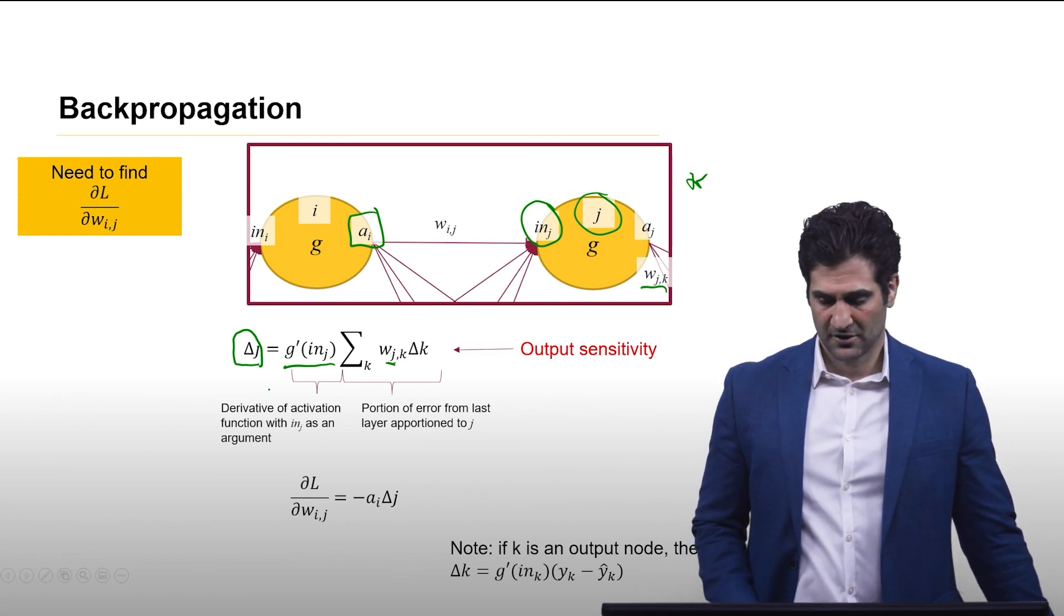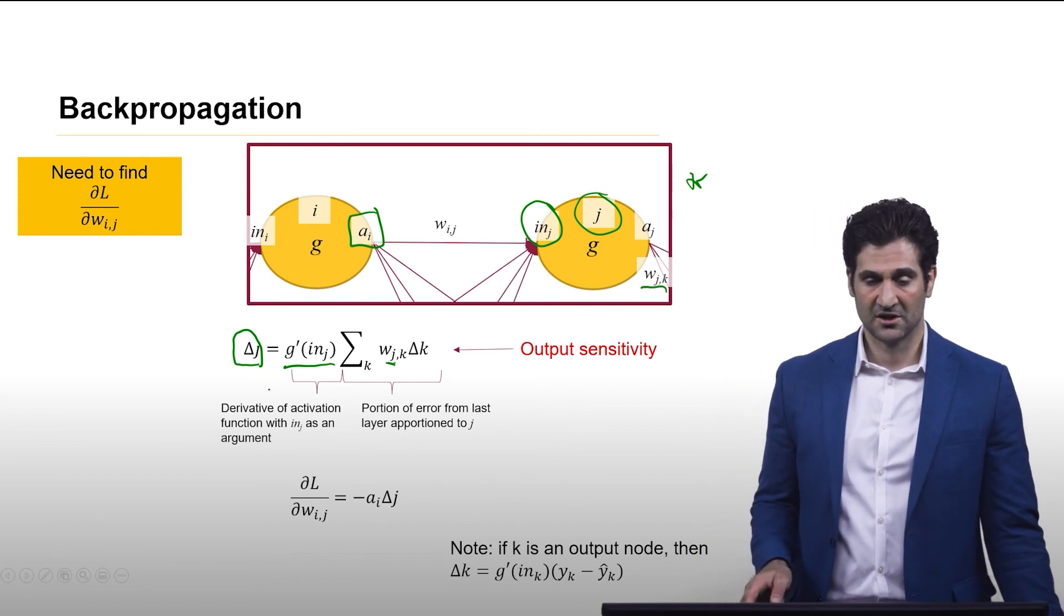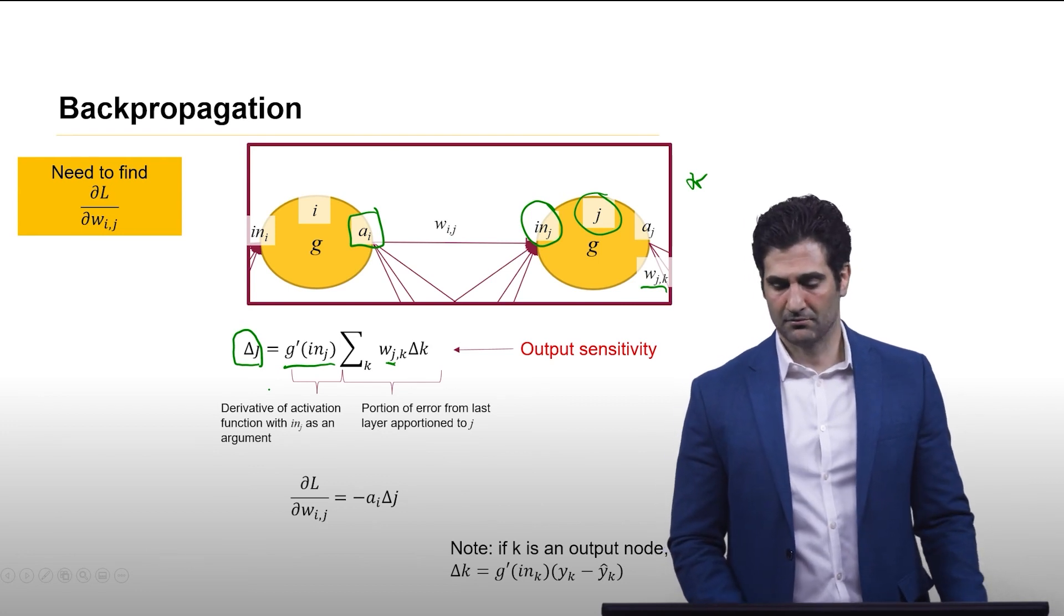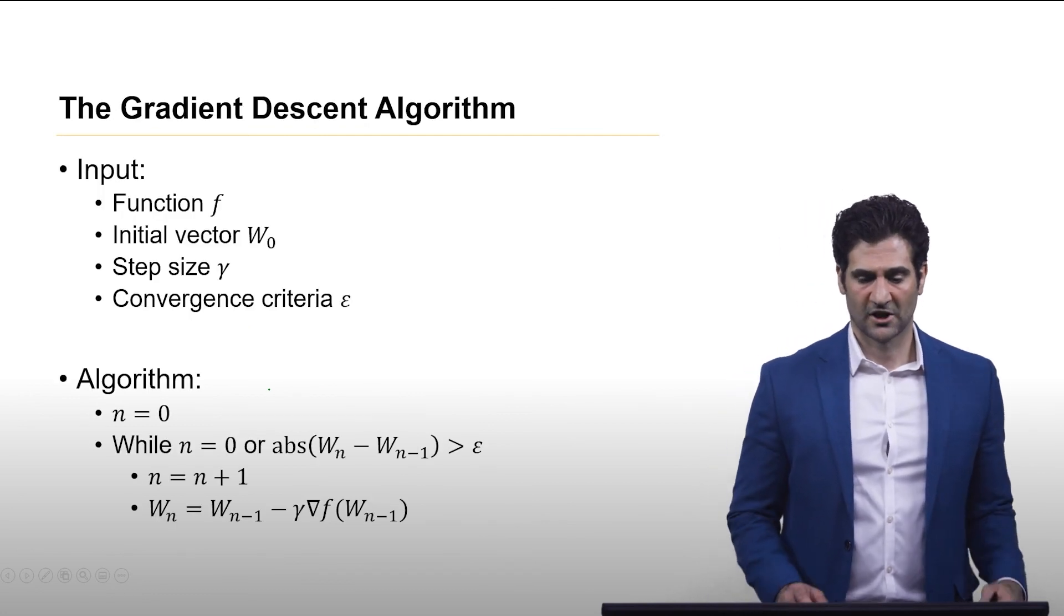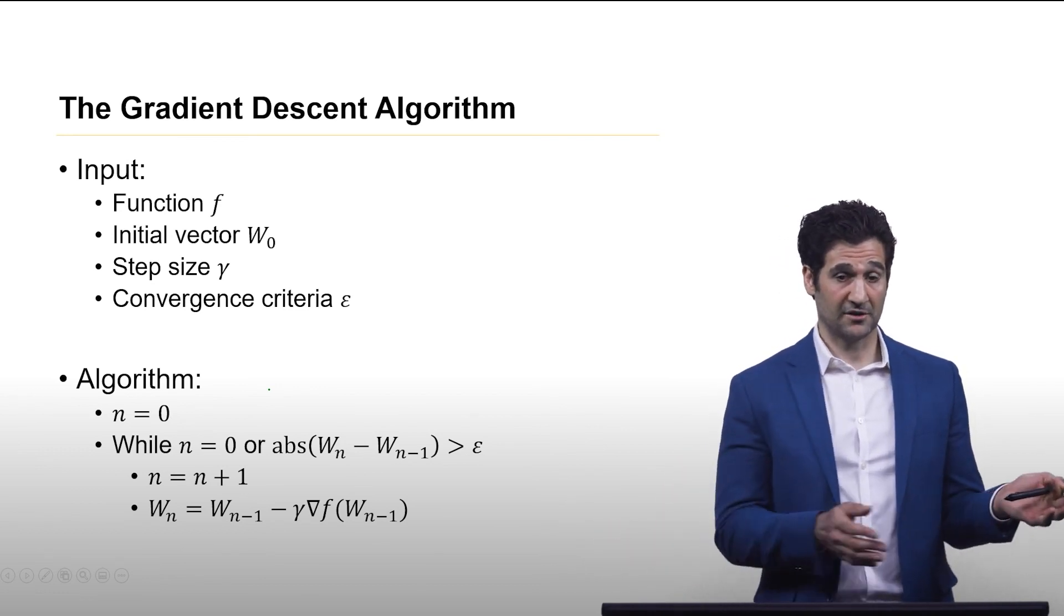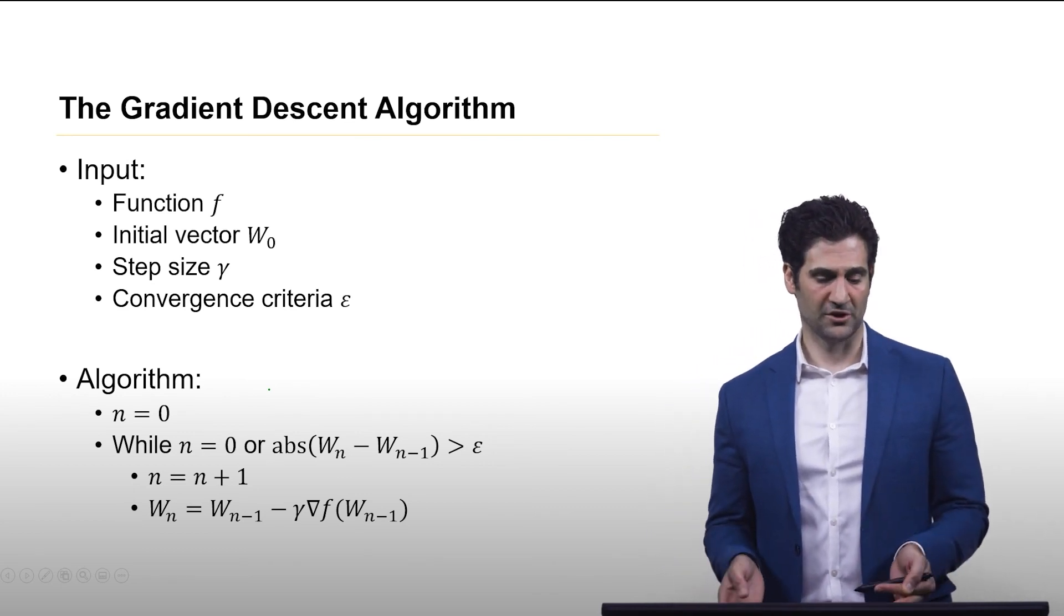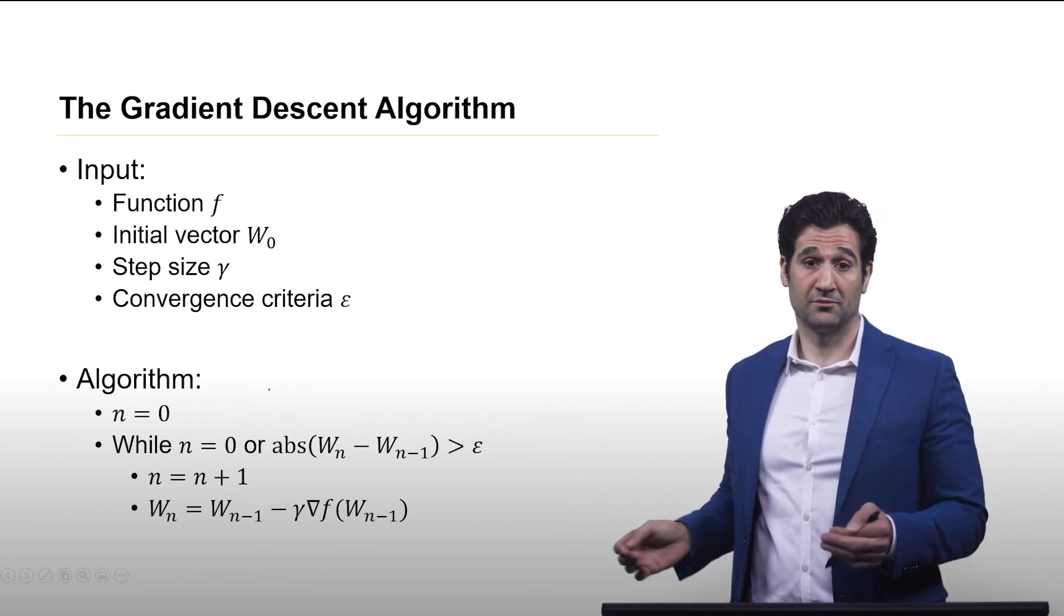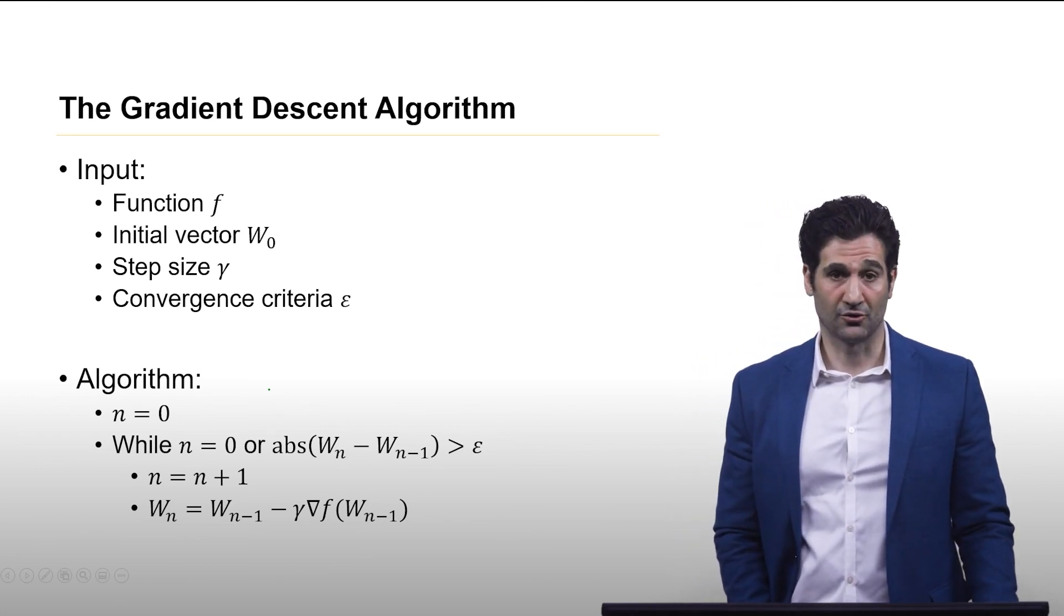One quick note, if k is an output node, the output sensitivity is computed based directly on the loss. Just a technical note, because it's the last layer. Well, now that we have this algorithm, backpropagation, which allows us to compute the gradient, we can then use gradient descent. And we can use gradient descent just as it is, knowing that the gradient is going to be computed using this little backpropagation trick, and this works in the normal way.